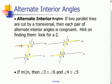The hint on finding alternate interior angles is to look for a Z. So for example, if we locate the Z here, the alternate interior angles would be the ones that are tucked inside of the Z. So here, angle 3 and angle 6 are alternate interior angles.